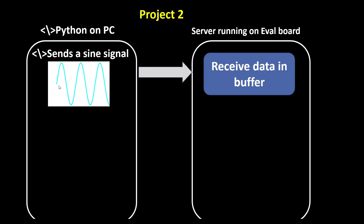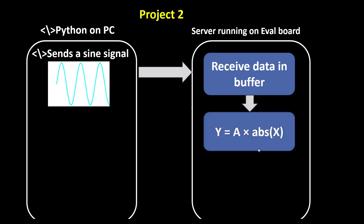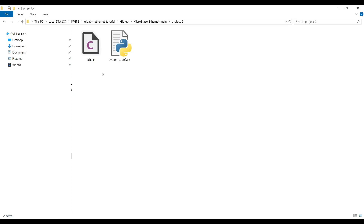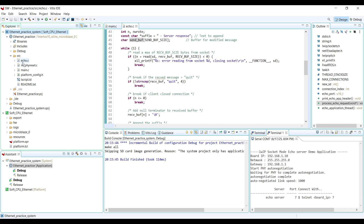In the second example, I try to show how we can send a buffer containing integer data from the PC as the client to the evaluation board as the server, receive the data on the evaluation board, then do a small modification — for example, calculate the absolute value of the received data, multiply them by a constant value — and then send back the data to the client. This example can be the starting point showing how we can send data to the evaluation board via the Ethernet protocol.